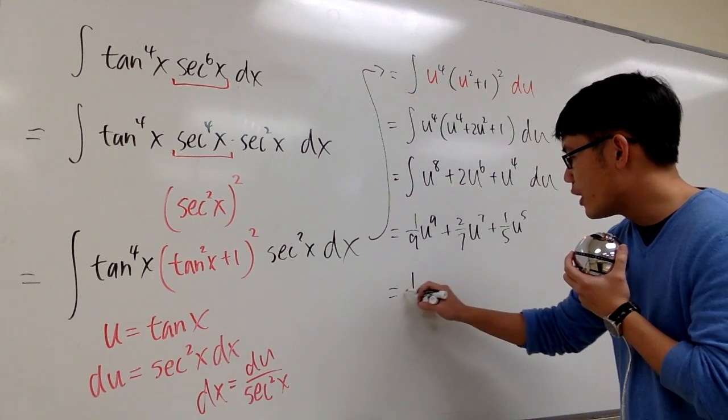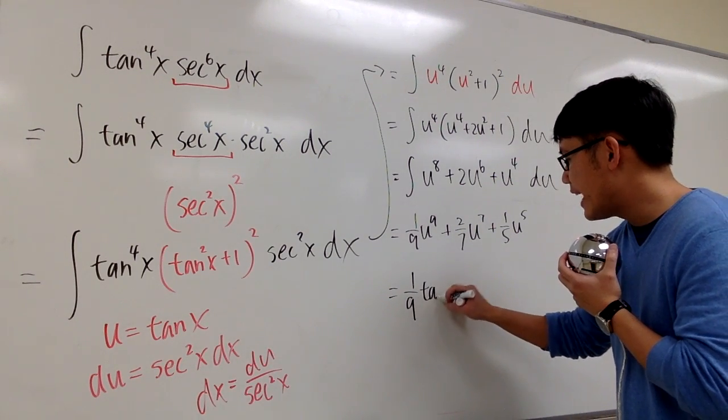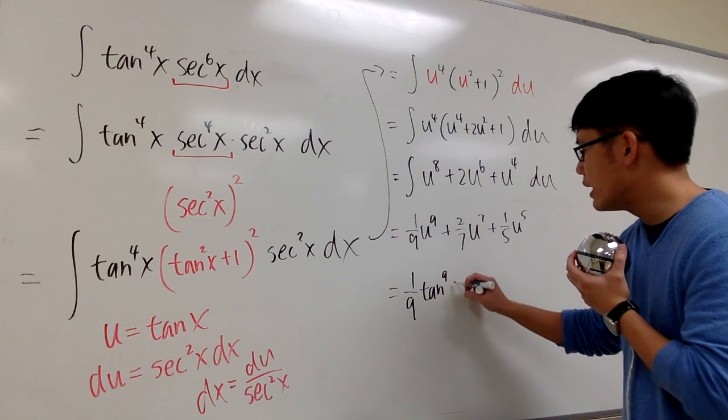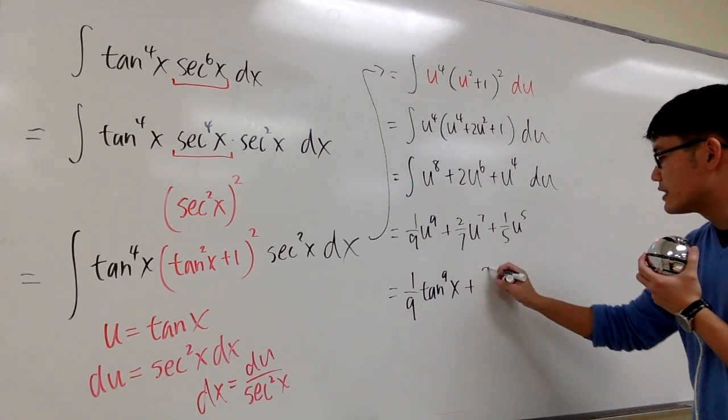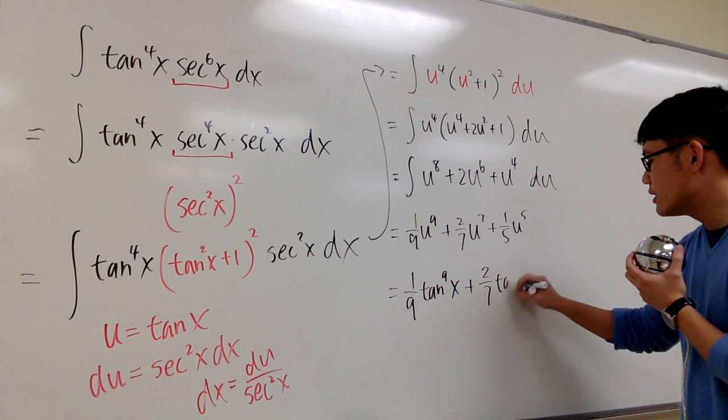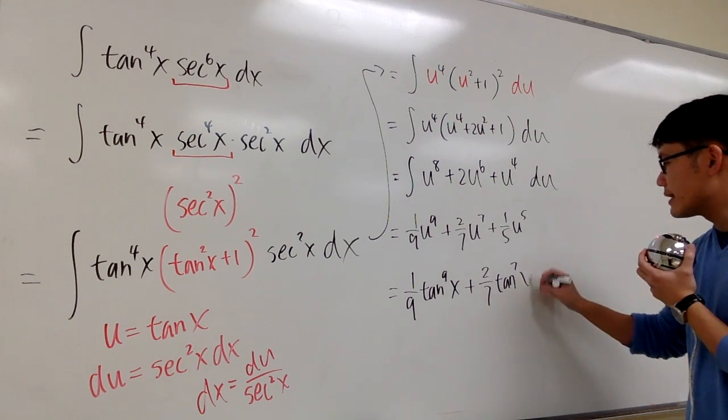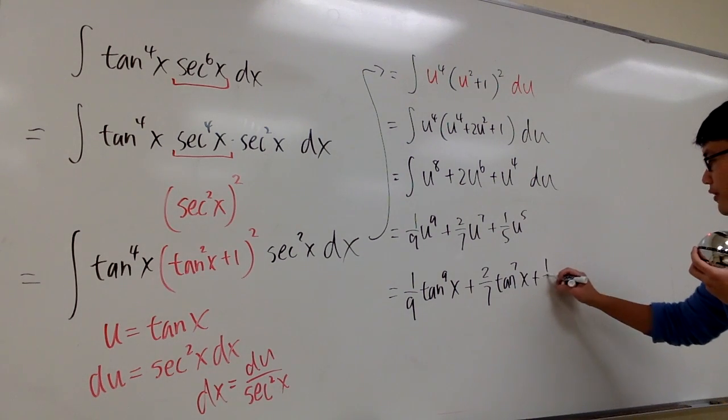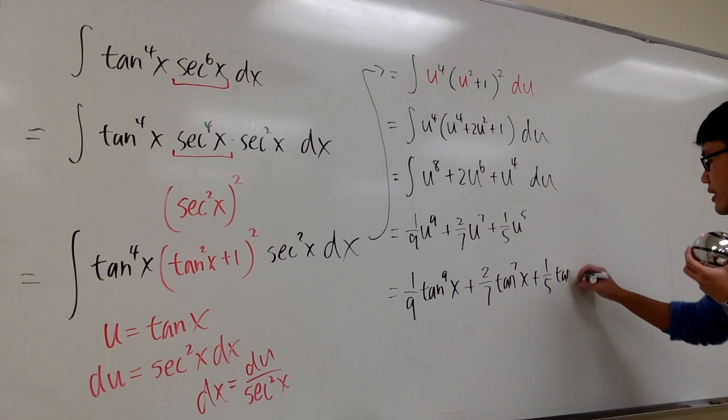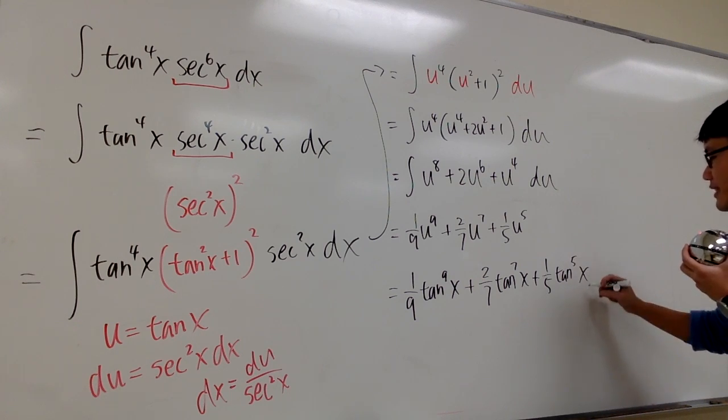So, we have the answer 1 over 9, tangent to the 9th power x, plus 2 over 7, tangent to the 7th power x, plus 1 over 5, tangent to the 5th power x. And then we are done.